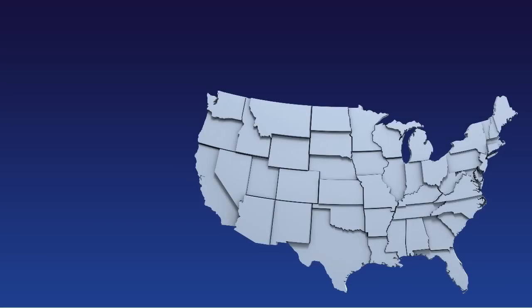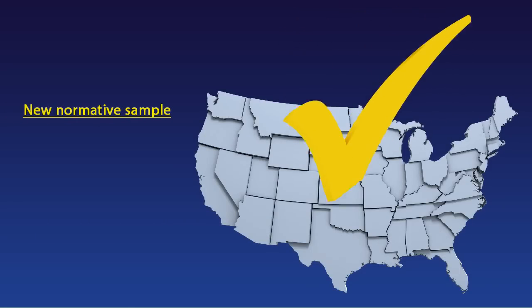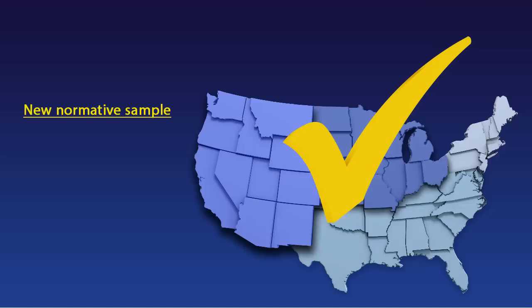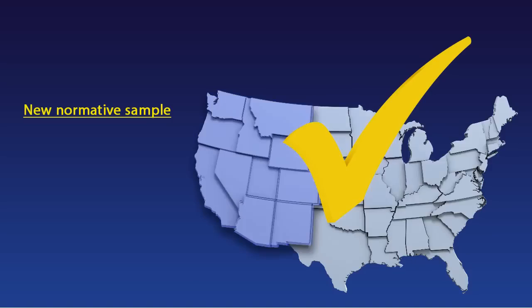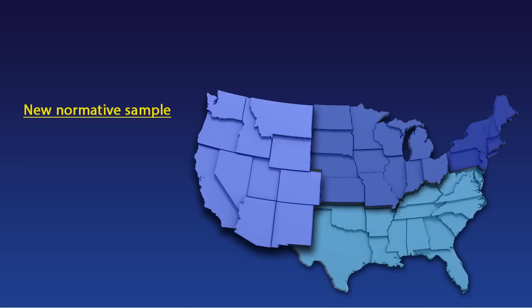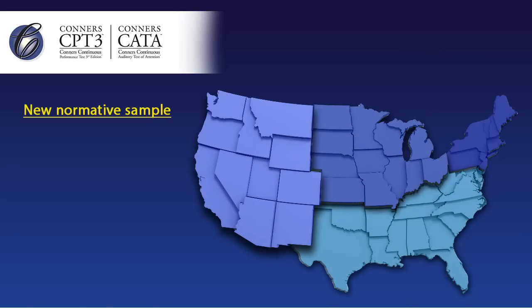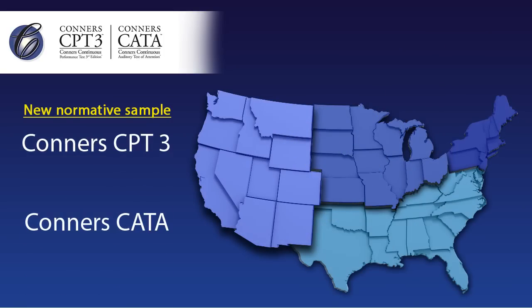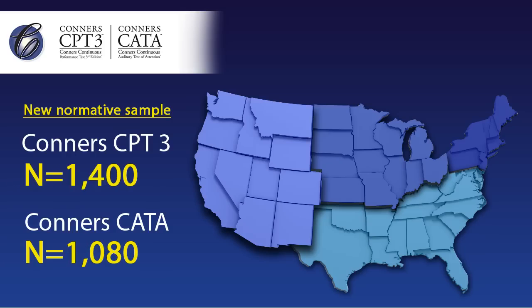The most representative CPT normative samples collected. The normative sample is representative of the United States population in terms of key demographic variables such as gender, race, geographical region, and parental education level.